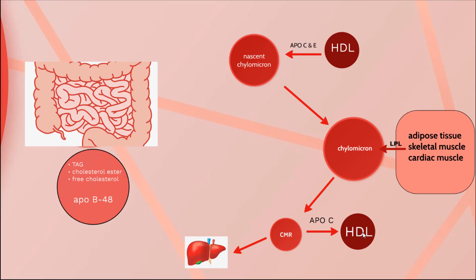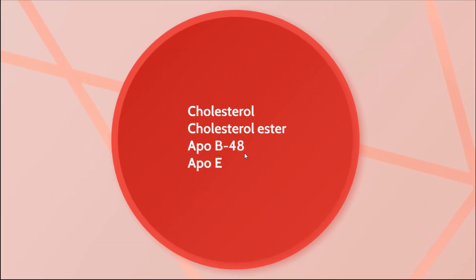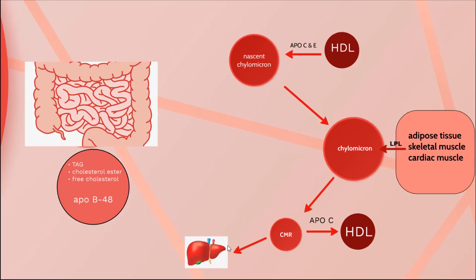Moreover, APO C is returned to HDL. The remnant portion is called chylomicron remnant, which is cholesterol-rich. This chylomicron remnant goes into the liver, where hepatocytes degrade it by the process of endocytosis. APO E inside the chylomicron remnant helps the hepatocytes to recognize it.